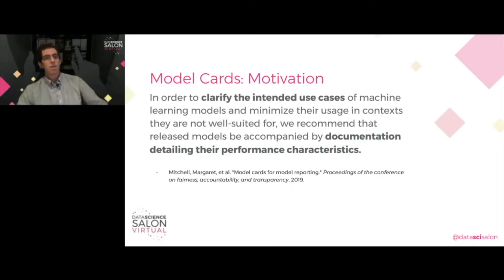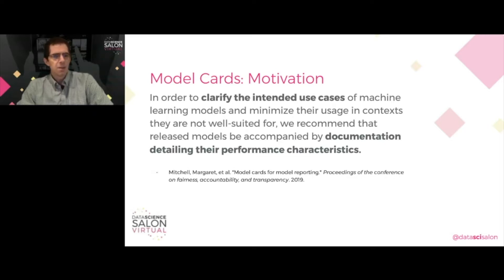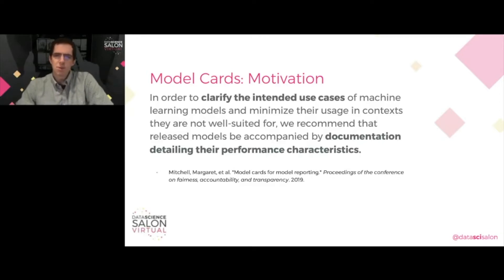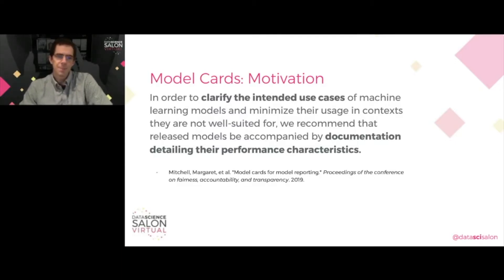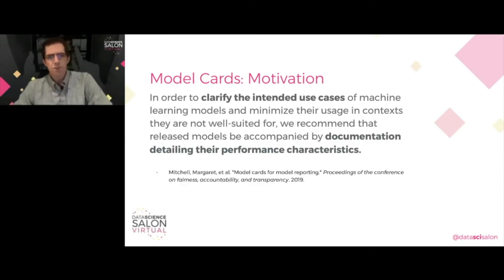The term model cards arose as part of a 2019 Google research paper. The paper was motivated by incidents wherein the deployment of predictive models resulted in outcomes that could be construed or understood as unfair or discriminatory. For example, the paper cites examples where a facial recognition model does not work on faces of people of African or Asian descent. The purpose of model cards isn't to fix all the models or eliminate all discriminatory software, but rather to serve as a foundation for transparency — really a starting point.